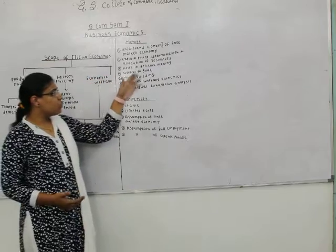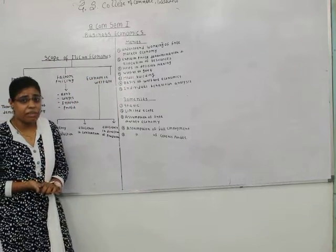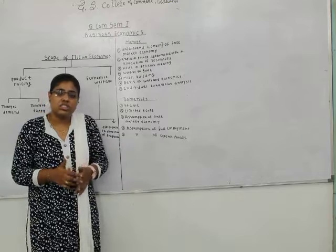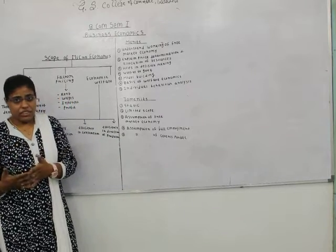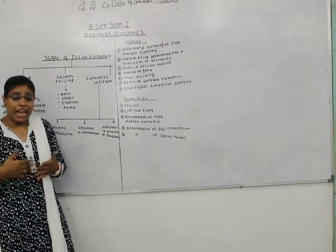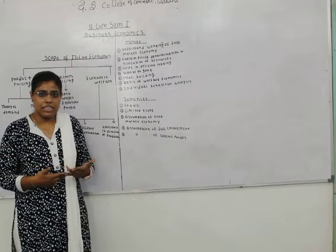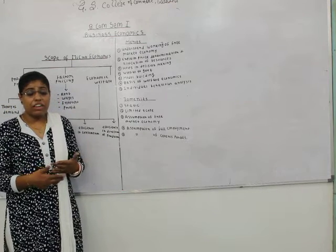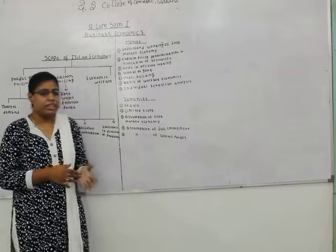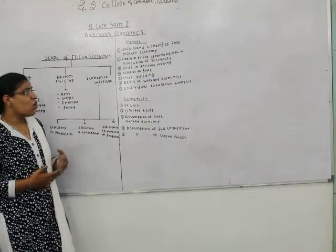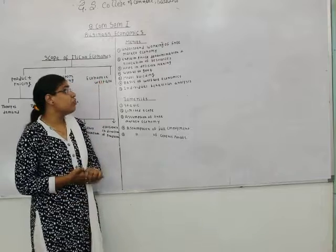The fourth merit is that it is useful to the government. Various economic theories help the government in making decisions like decisions regarding tax rates, tax policies, and public expenditure policies — which includes public finance policy covering public expenditure, public revenue, public debts, etc. In this way microeconomics is useful for the government.